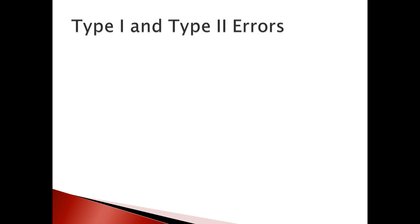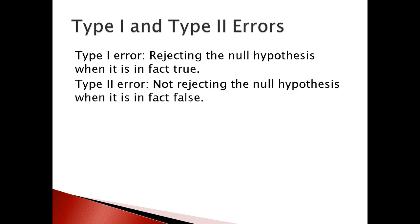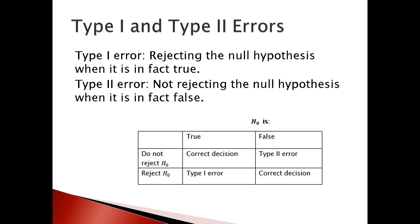In hypothesis testing we may encounter errors, so we classify errors into two types: Type 1 and Type 2. Type 1 error is rejecting the null hypothesis when it is in fact true. Type 2 error is not rejecting the null hypothesis when it is in fact false.